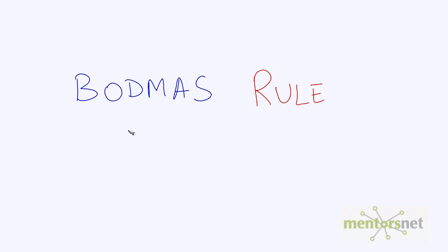Hey guys, let's talk about Bodmer's rule in this video. Bodmer's rule is something that is used in everyday mathematics, so it's very important to know this concept. Bodmer's rule is all about giving priority to some of the mathematical operations over some other mathematical operations.